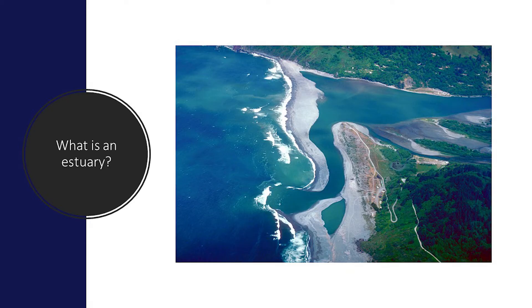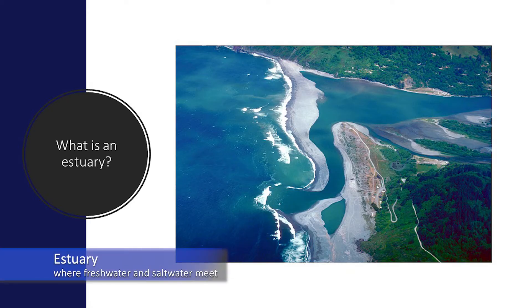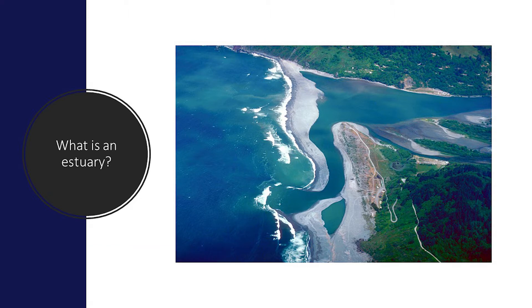What is an estuary? An estuary is a body of water where rivers or streams meet the sea or ocean. Estuaries are typically partially enclosed by land or another barrier while remaining open to the ocean. They can be identified by fresh water from rivers and streams flowing into the salt water from the sea. Estuaries are fragile and sensitive ecosystems that are easily affected by changes in land and development, and water quality declines could endanger wildlife in estuarine areas.